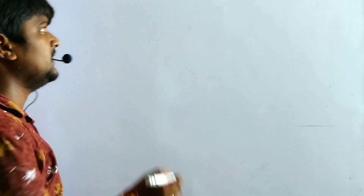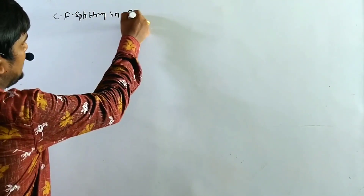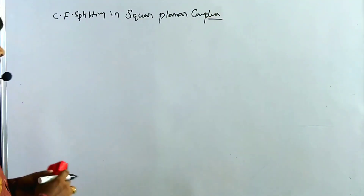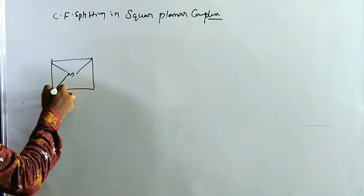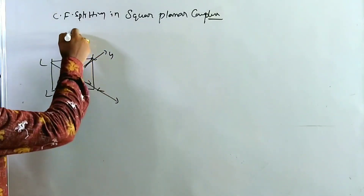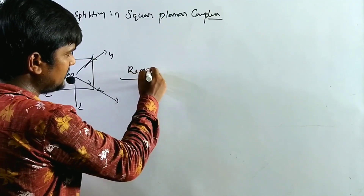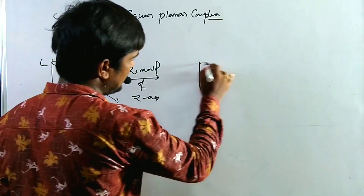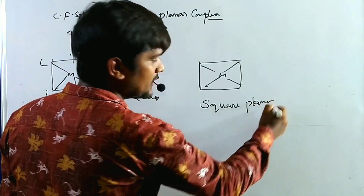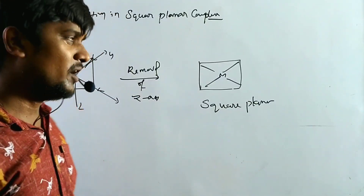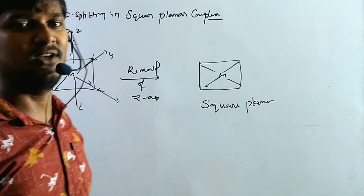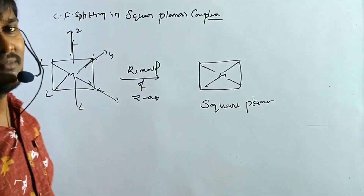Now we discuss crystal field splitting in square planar complexes. In octahedral geometry, ligands are present along X, Y, and Z axes. When the two Z-axis ligands are removed, we get a square planar complex with ligands only along X and Y axes. The XY orbitals then experience much more repulsion and are placed at the top of the energy diagram.